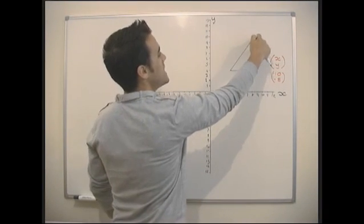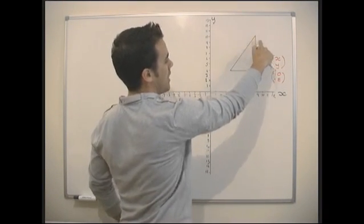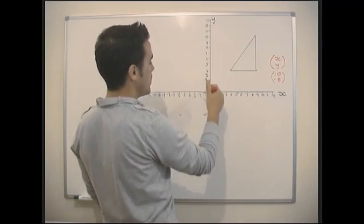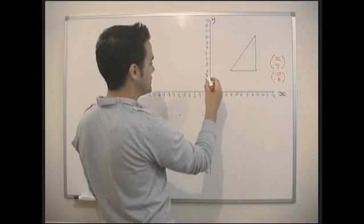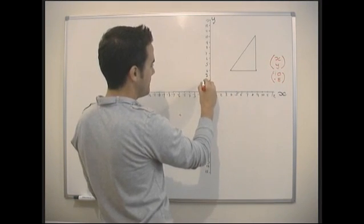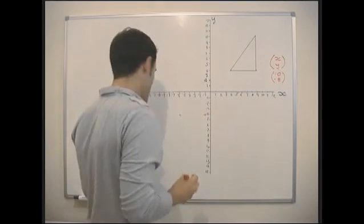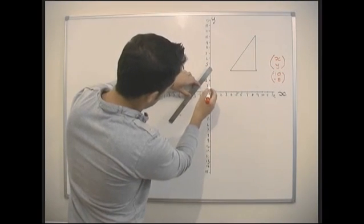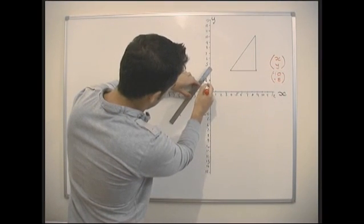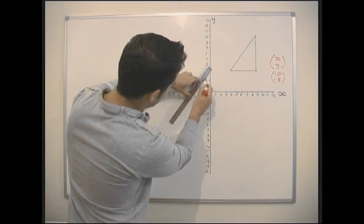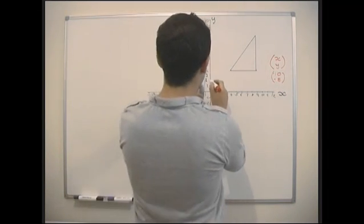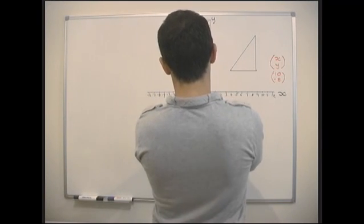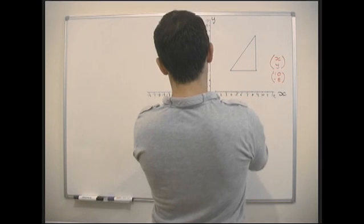And now we've got this point at (9, 10): nine minus ten gives one in x, and ten minus eight gives two in y. So it's going to be at (1, 2). Then we just join those points up and we get our new translated triangle. You can see we've got our fancy new triangle, translated by (-10, -8).